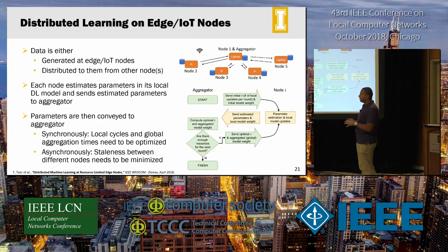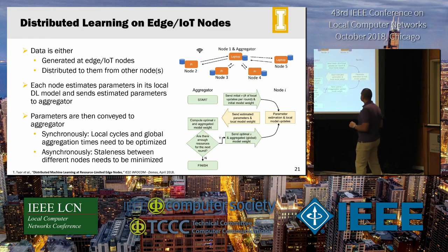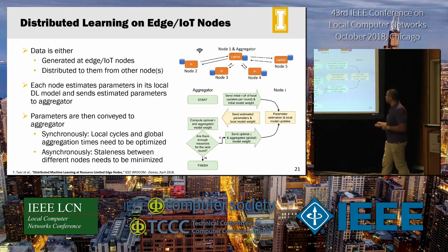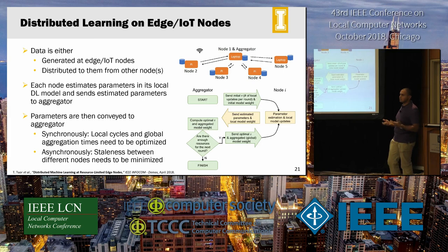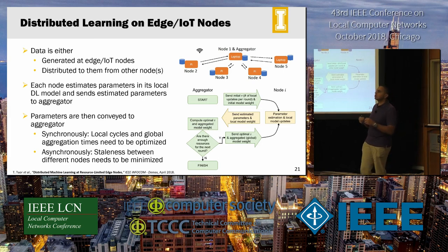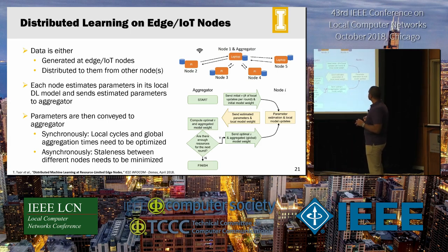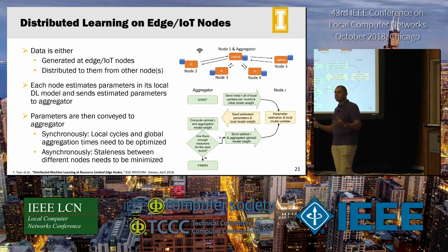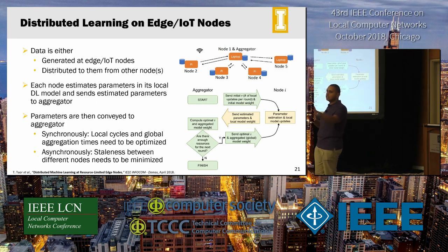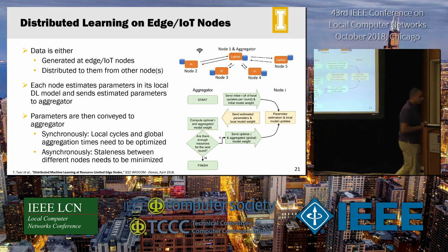On the asynchronous version, the problem is not how many cycles are needed but what I call staleness — different nodes may have different delays in sending their parameters, which degrades convergence rates significantly. One key problem to solve in asynchronous distributed learning is ensuring that although nodes are asynchronous, they don't accumulate excessive staleness between one another. Otherwise, the learning process will take much more time to converge.